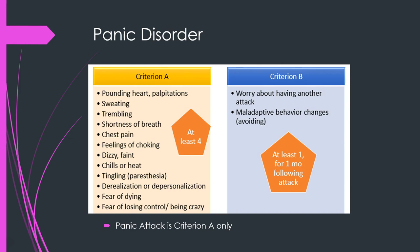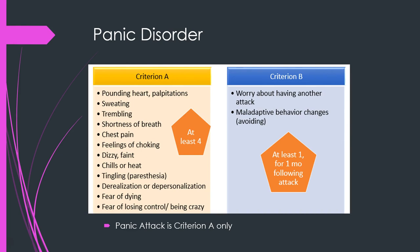For panic disorder, a panic attack is Criterion A — at least four of the following: pounding heart, sweating, trembling, shortness of breath, chest pain, feeling like you're choking, dizziness, tingling, or fear of dying. A panic disorder involves having these panic attacks and also developing worry about having another attack and making maladaptive behavior changes like avoiding situations that caused the panic attack.